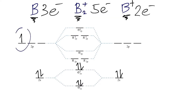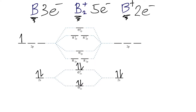Note that we only have one electron left, so we just have to fill in that one electron into the molecular orbital diagram. We start with the lowest energy molecular orbitals, which are the π2p molecular orbitals. There are two of them at the same energy level, so we just put this one electron into either of those π2p orbitals. And that's it — that's our completed molecular orbital diagram for B2+.